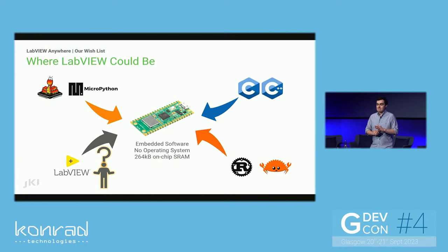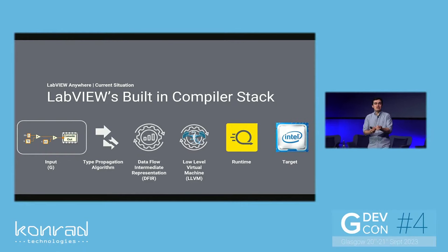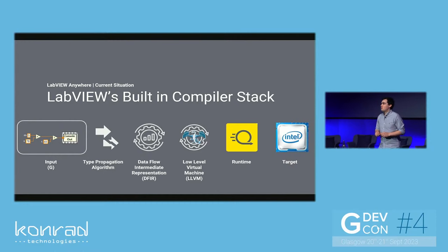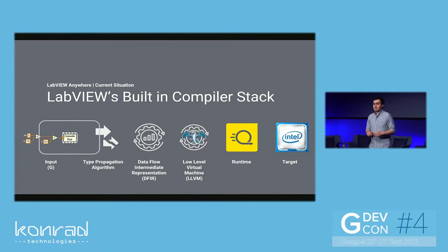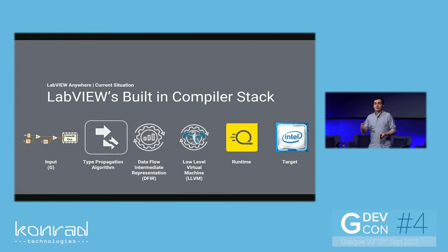To answer that question, we need a bit of understanding about the current compiler stack. We start off writing our code in G — hopefully we're familiar with this step. We want to stick to writing in G because it's awesome. The data flow paradigms of G make it amazing. We all know about the broken run arrow — this is a step in the compiler stack which essentially validates your code. Because LabVIEW is a strictly typed language, if you try to wire a string into an add function, it's going to break.